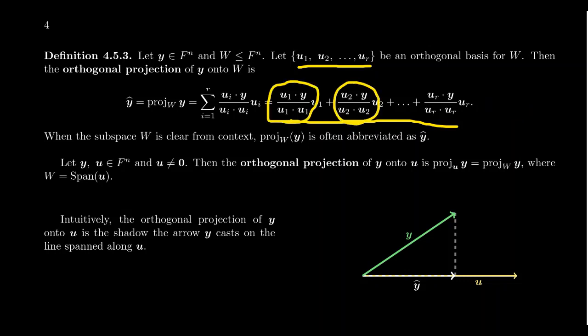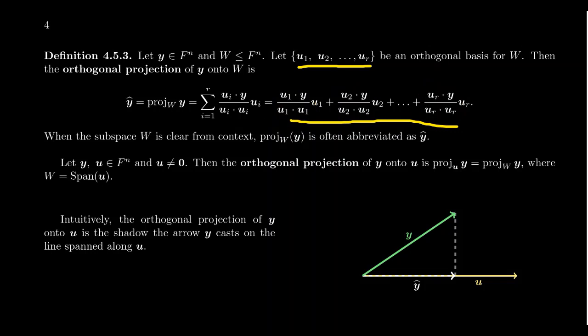The coefficients are the Fourier coefficients: (u_i · y) / (u_i · u_i). In more compact form, we take the sum where i ranges from 1 to r of all the basis elements with their corresponding Fourier coefficients. This is called the orthogonal projection onto the subspace.